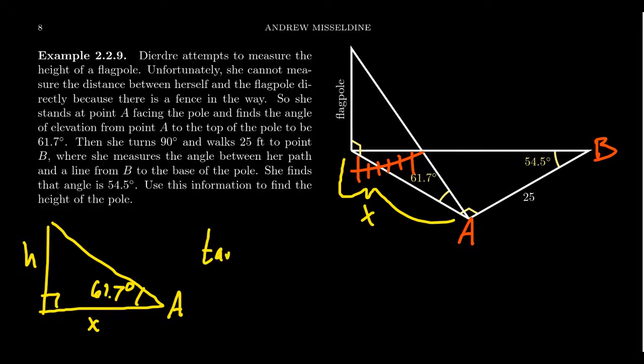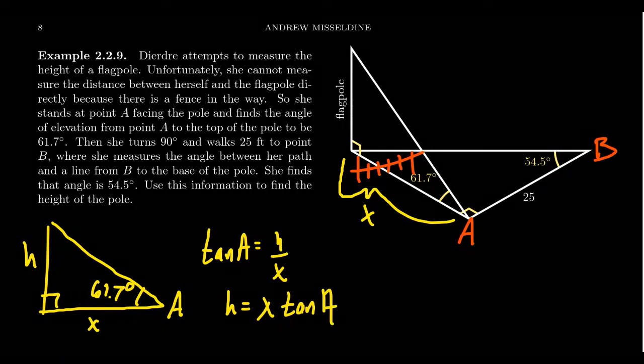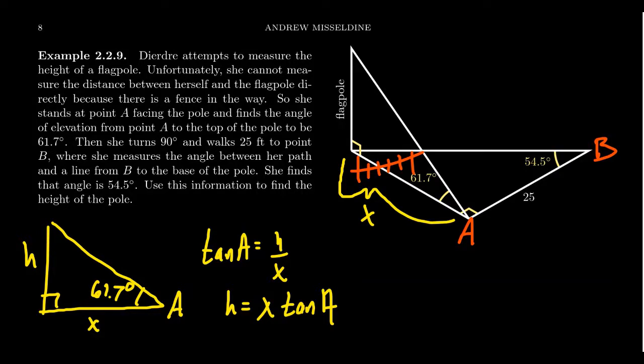If we use the tangent ratio, we get that tan A equals H over X. Clearing the denominators, we get H equals X times tan A, which is good news if she knew the distance between her angle measure and the flagpole, but she doesn't because of that fence. So that's why she walked along the sidewalk to get a different measurement.